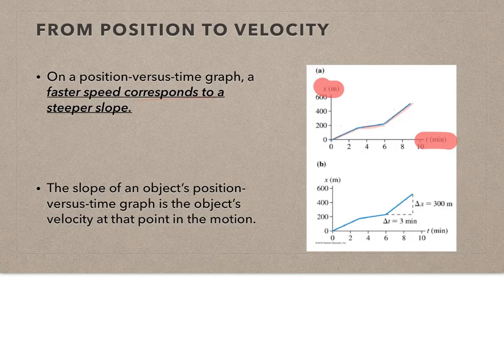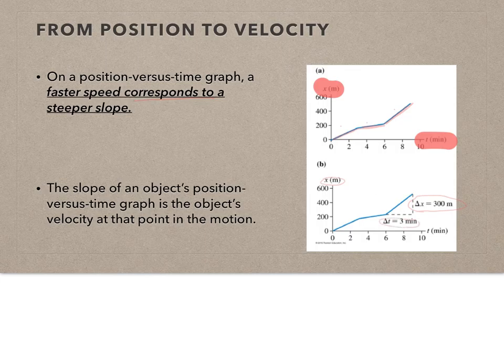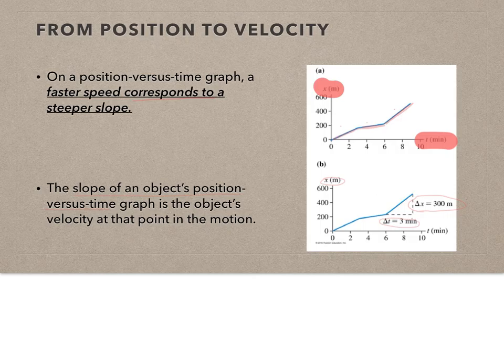I can find the actual number values. On the graph I can do a rise over run — the rise being delta x, and these are my values. This gives rise divided by run, and at any time I can find a numerical value from the graph. The slope of the object's position versus time is the object's velocity. So this tells me the velocity is 300 meters per 3 minutes, or 100 meters per minute.